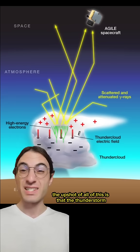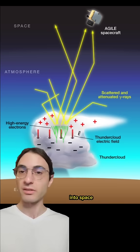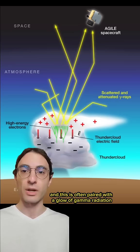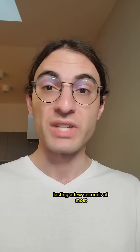The upshot of all of this is that the thunderstorm ends up shooting electrons in a tight beam at nearly the speed of light into space, and this is often paired with a glow of gamma radiation coming from the storm. And then it's over, lasting a few seconds at most.